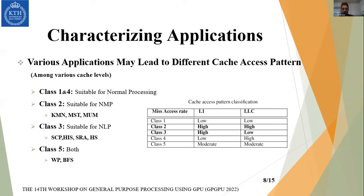For characterizing applications, as shown in the table, we categorize applications into five independent classes and observe that various applications lead to different cache access patterns across cache levels. In classes one and four, applications have a low rate of L1 miss access, meaning these applications are not memory-intensive and are suited for conventional processing — memory access is not a bottleneck.